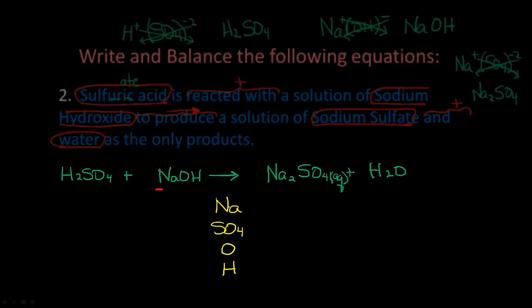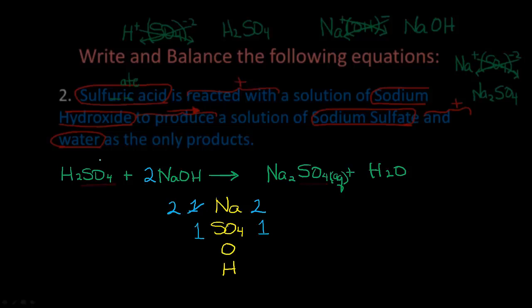Now balance our metals: on the reactant side we have one sodium (from NaOH), and on the product side we have two sodiums (Na₂SO₄). We need two sodiums on the reactant side, so we put a coefficient of 2 in front of NaOH — we now have 2 NaOH. Next, sulfates: one SO₄ on the reactant side (H₂SO₄) and one SO₄ on the product side — already balanced.